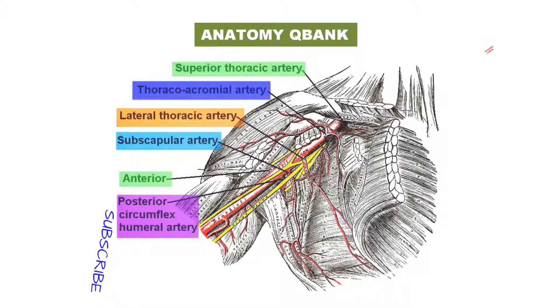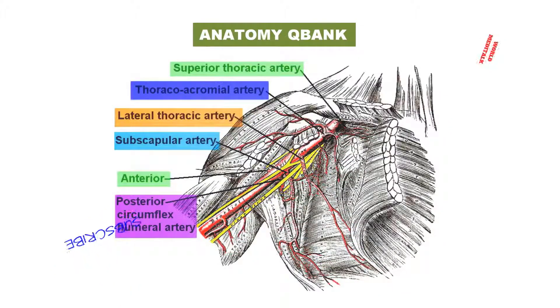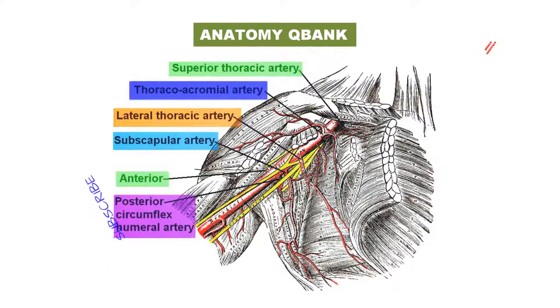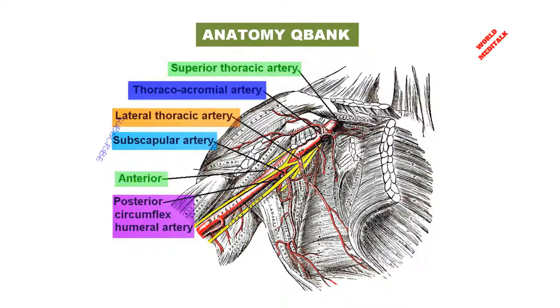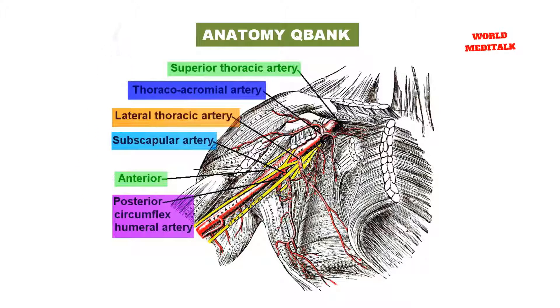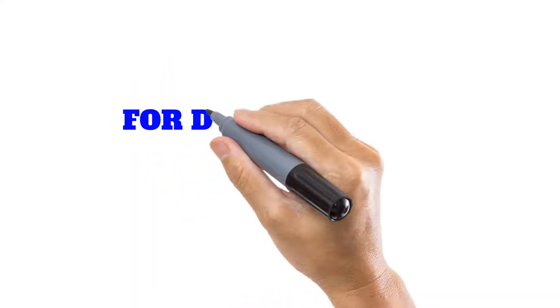There is also an arch of the anastomosis above the olecranon, formed by the interosseous recurrent joining with the inferior ulnar collateral and posterior ulnar recurrent.